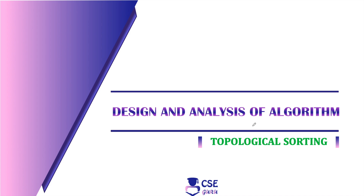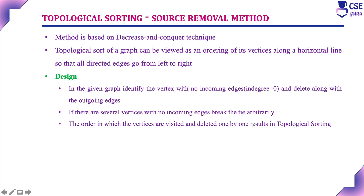Welcome to CSE Guru. In this session we will discuss an example to implement topological sorting. Topological sorting is nothing but linear ordering of vertices, and it can be implemented with the help of two methods: one is the DFS method and another one is the source removal method. In this session we will discuss an example to implement the source removal method.